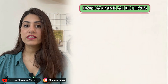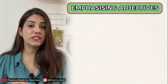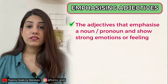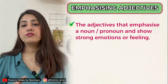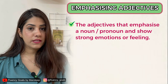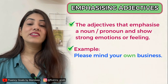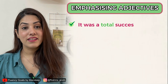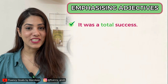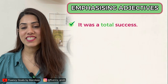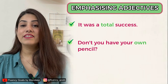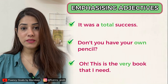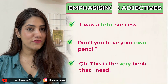Moving on to emphasizing adjectives — adjectives that emphasize a noun or pronoun and show strong emotion or feelings. Examples: 'Please mind your own business' — 'own' is an emphasizing adjective. 'It was a total success' — 'total' is emphasizing 'success'. 'Don't you have your own pencil?' — 'own' is again an emphasizing adjective. 'This is the very book that I need' — 'very' is an emphasizing adjective.